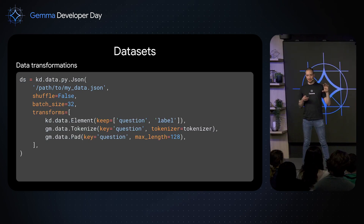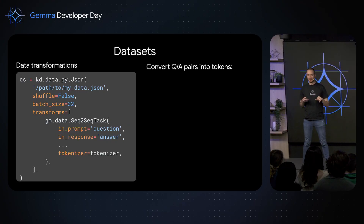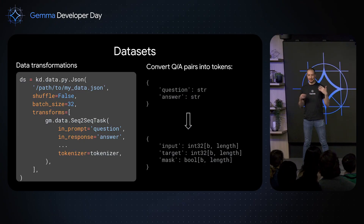We have a transform API that allows you to apply specific transformations to individual elements of your dataset — for example, tokenizing or padding. With the Gemma library, we provide high-level transformations for common tasks like supervised fine-tuning, which takes a pair of a question and answer from your dataset and converts them into input tokens and loss.